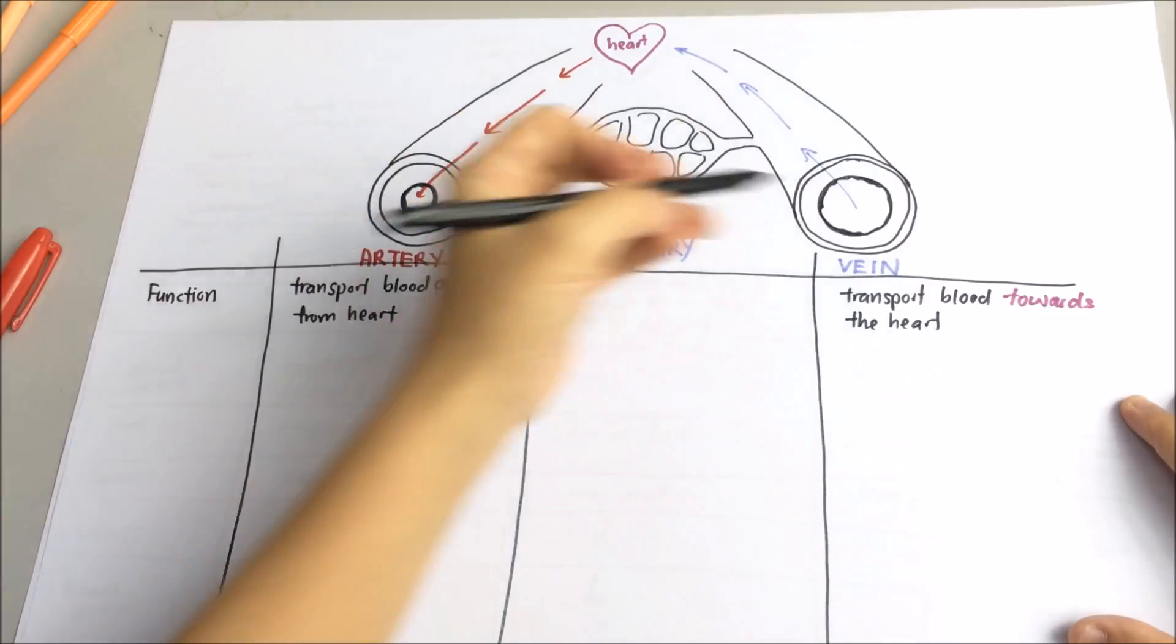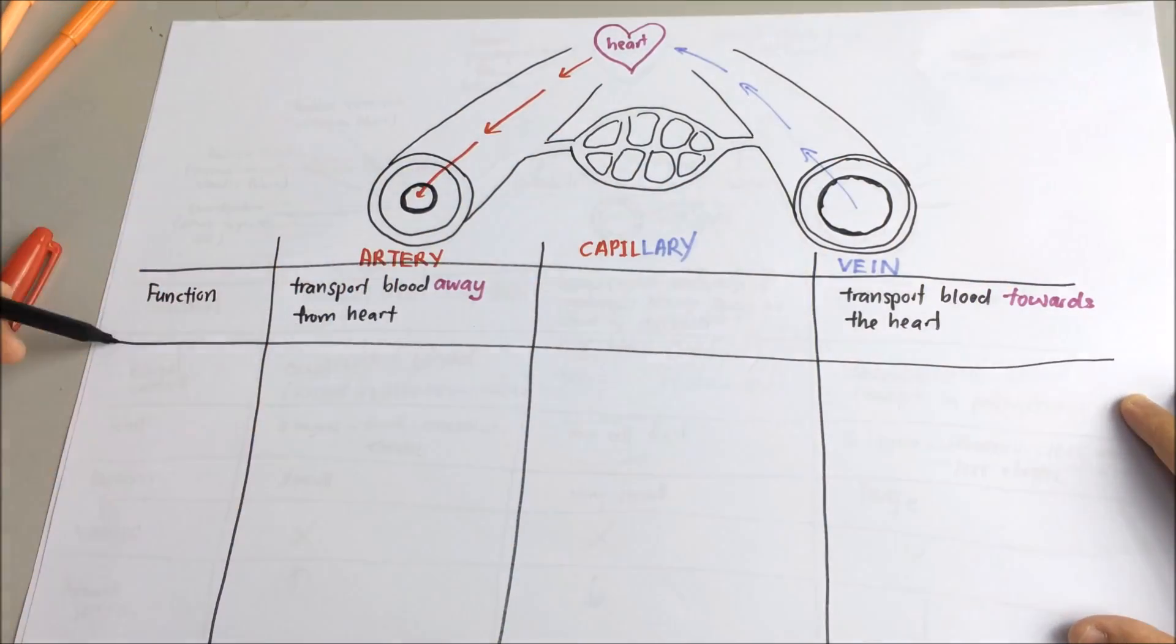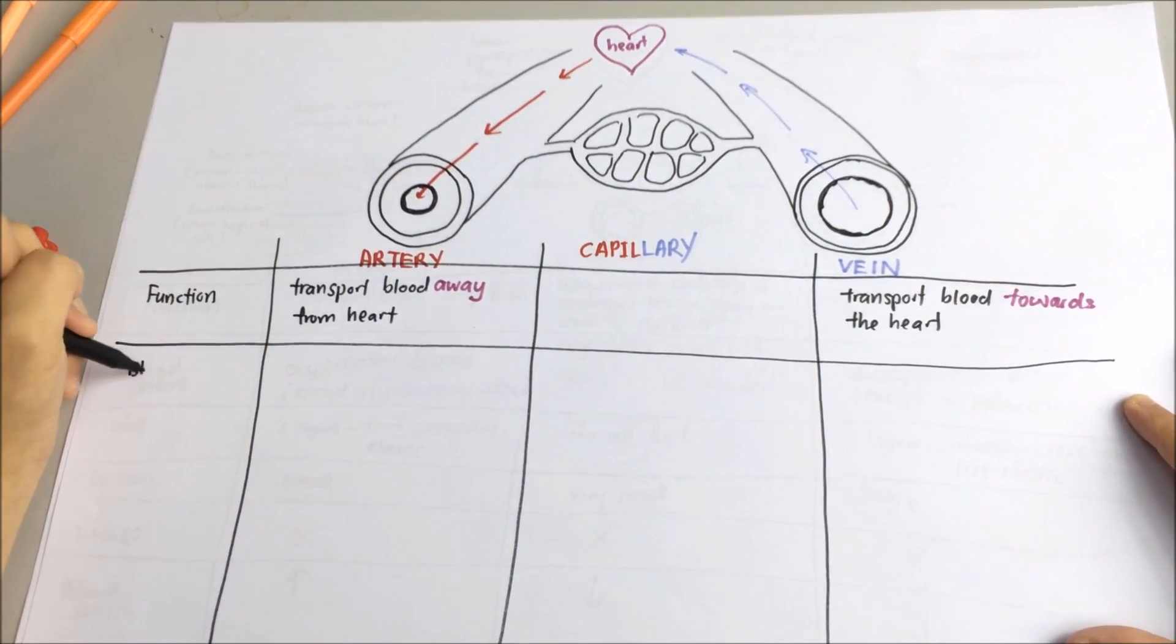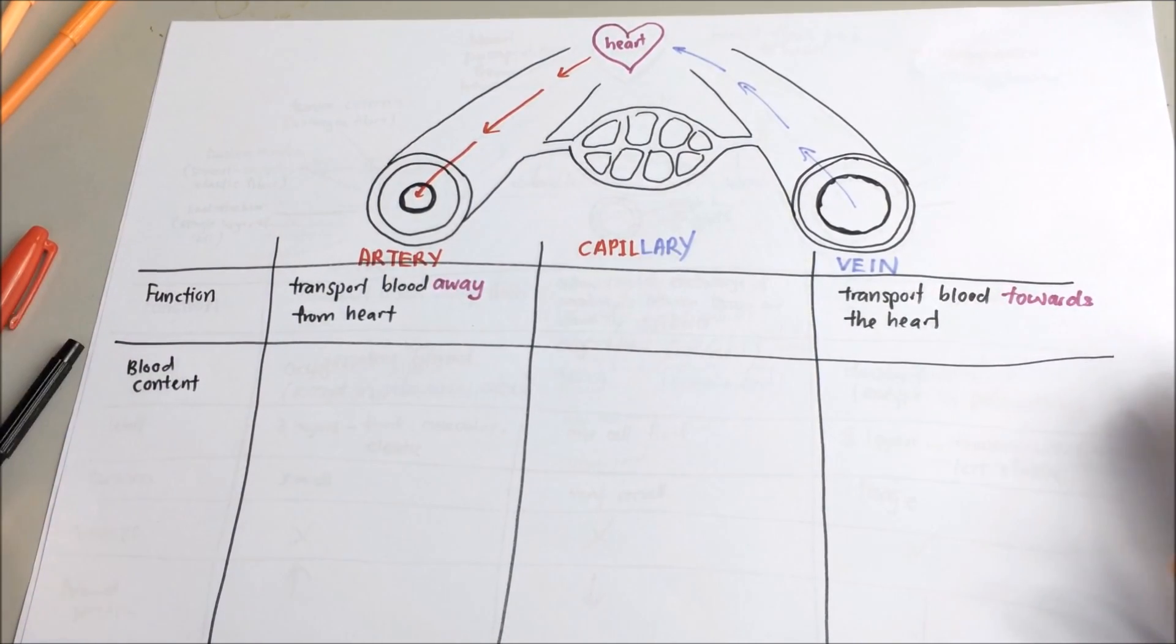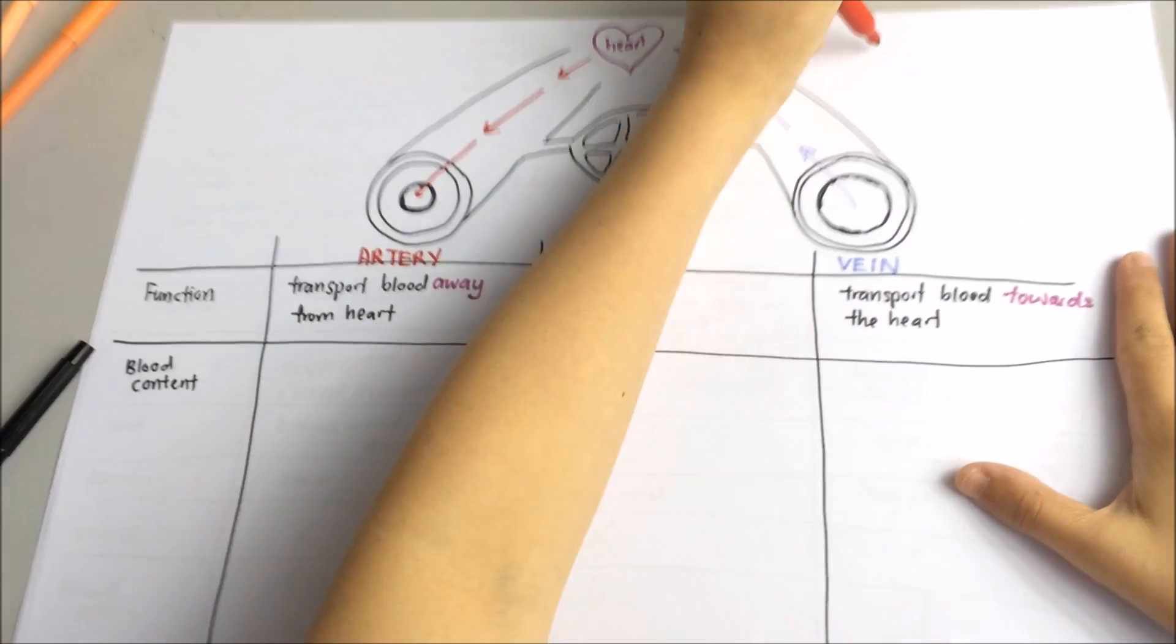At this point, let's just compare between the artery and vein first. We'll look at the capillary later. Now, we'll look into the blood content.